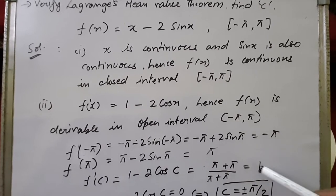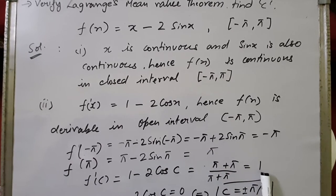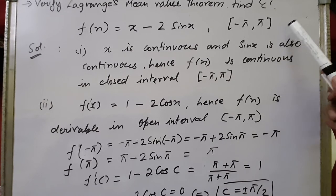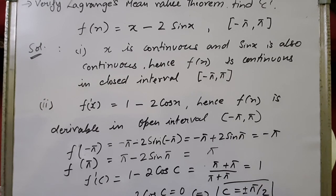So we get 1 - 2cos(c) = 1, which simplifies to -2cos(c) = 0, giving cos(c) = 0. Within the interval [-π, 2π], cos(c) = 0 at two values: c = π/2 and c = -π/2. Therefore c = ±π/2.